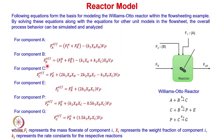Similarly, the mass balance for component B in the effluent is: F_B,effluent = F2B + FRB − (K1·XA + K2·XC)·XB·V·ρ. Here F2B is component B added through stream F2, FRB is B in the recycle stream, K1·XA·XB represents B consumed by reaction 1, and K2·XC·XB represents B consumed by reaction 2, all multiplied by volume and density.